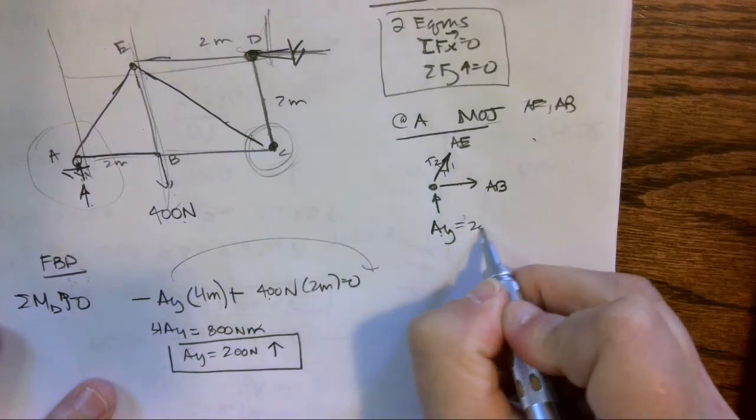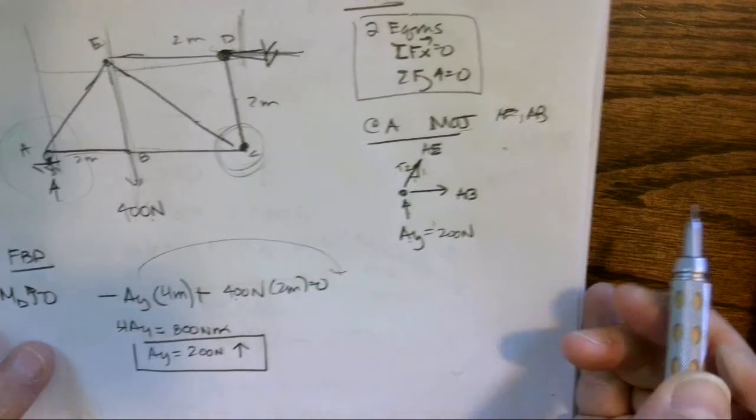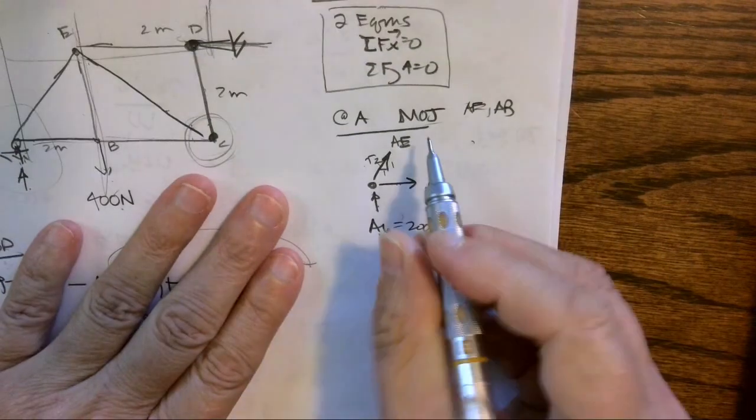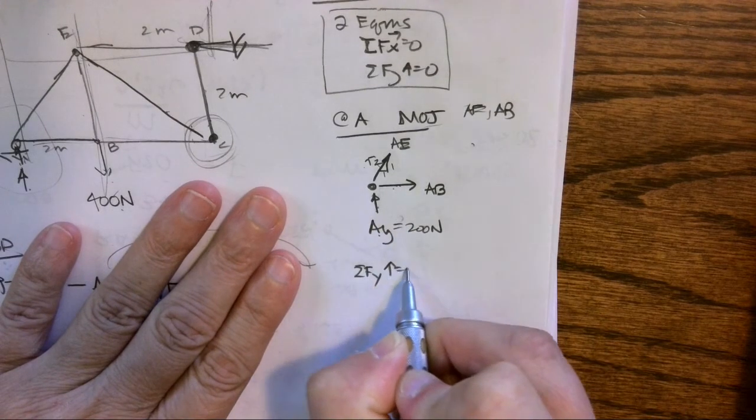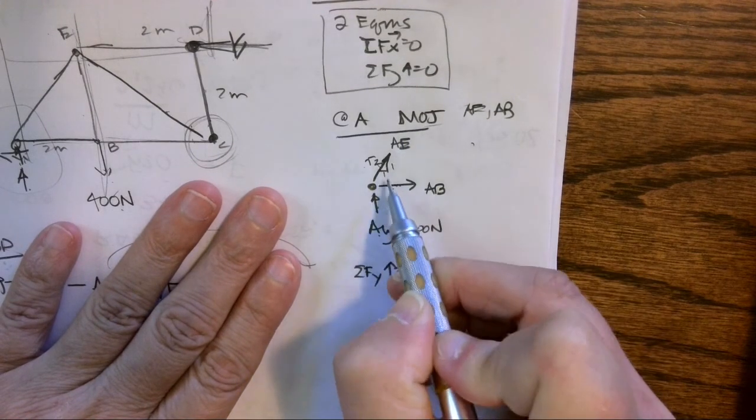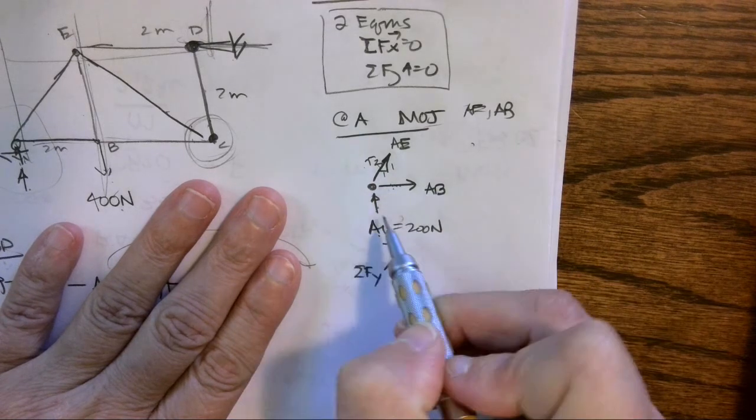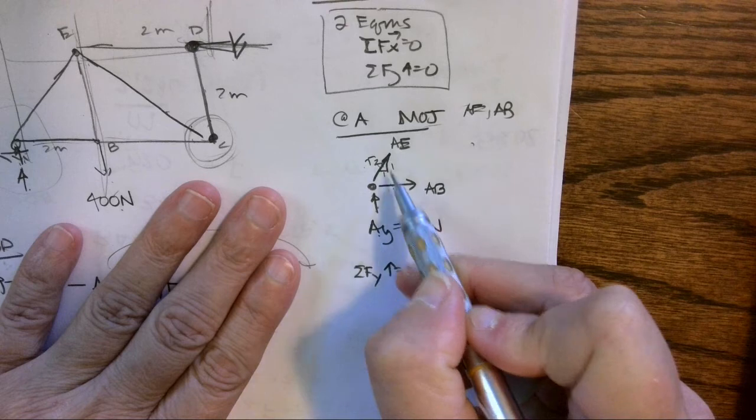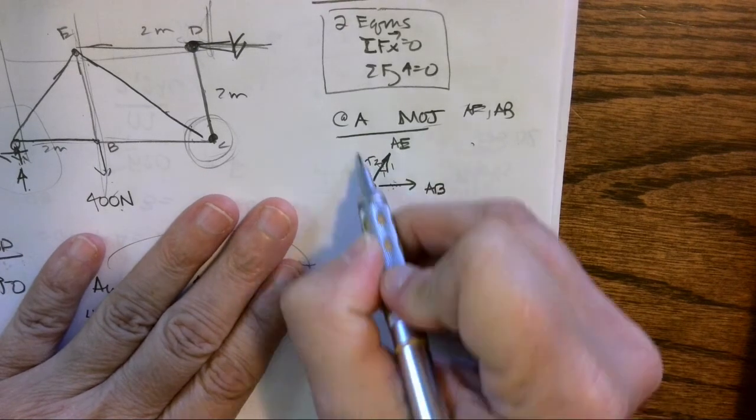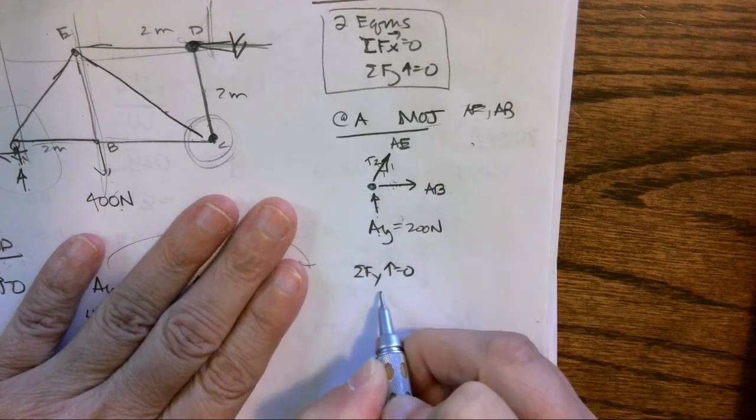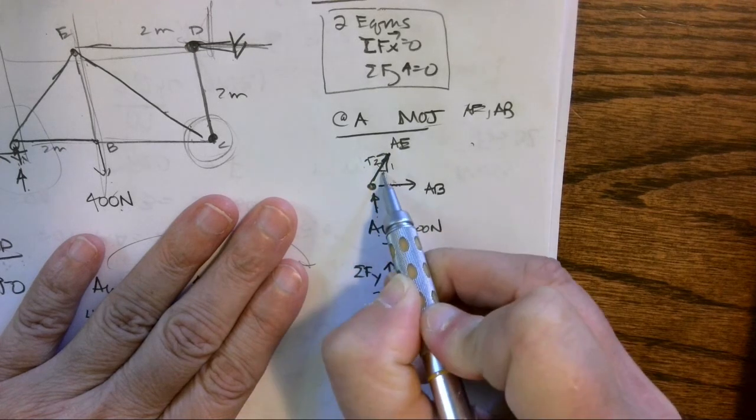So I can come back over here and this equals 200 Newtons. So I now have a known quantity and I have two unknowns, so let's start with summing forces in the Y direction. Both of these have an X component, so if I start with summing forces X, I don't have a known force yet in the X direction and I'll have two unknowns, so I'm going to start with Y.